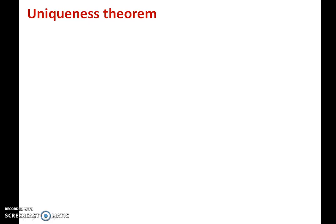Now I am considering a case where the Laplace equation, del squared V = 0, has two solutions. One solution is v1 and the other is v2. If v1 and v2 are both solutions of the Laplace equation, then each solution must satisfy the Laplace equation. So we can write del squared v1 = 0 and del squared v2 = 0.